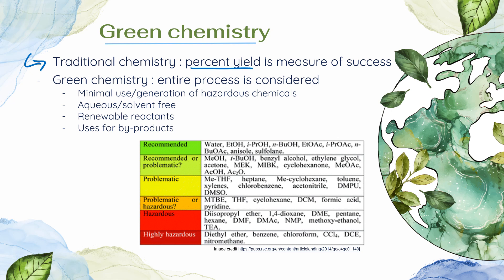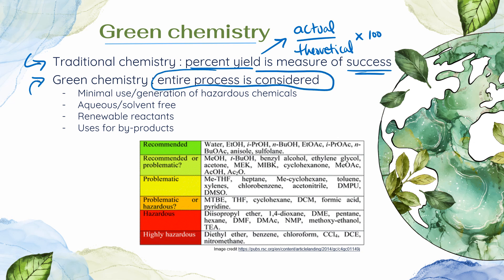We already have calculated some percent yield in our stoichiometry unit. Remember that percent yield is our actual yield — how much we actually made when we went to the lab — divided by the theoretical yield — how much we should have made of that product given our stoichiometric calculations — times 100 to turn that into a percent. This is a measure of success of making some particular product. In green chemistry, we're thinking about the whole entire process of making that product, not just how much of the product we actually made.